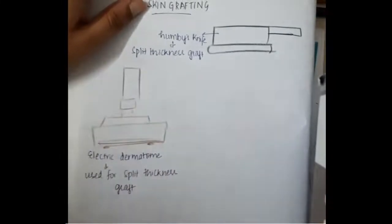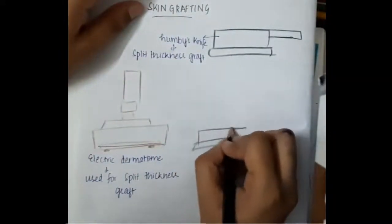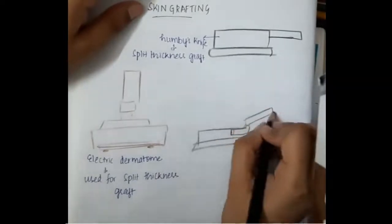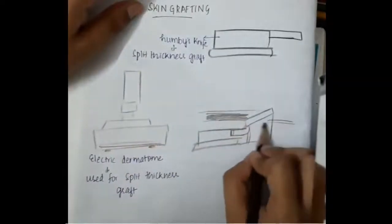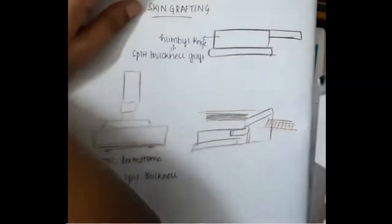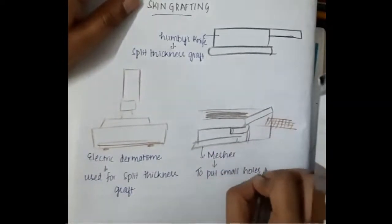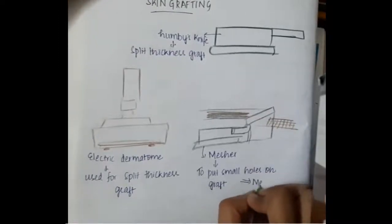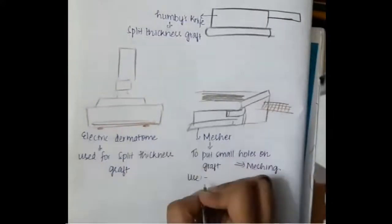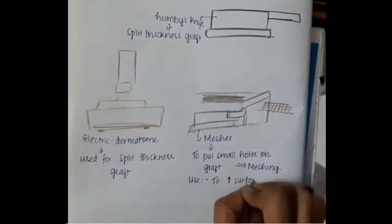Using the electric dermatome on the skin, we obtain a split thickness graft and put that graft into the mesher. This is the instrument where we put the split thickness graft. The mesher puts small holes on the graft, and this process is called meshing. The purpose is to increase the surface area of the skin.